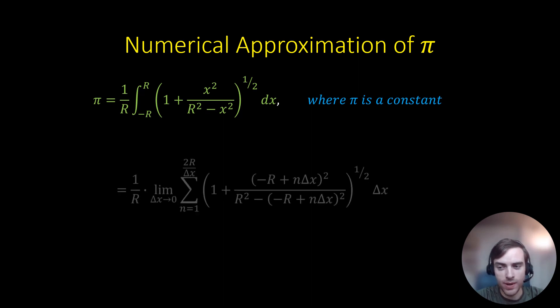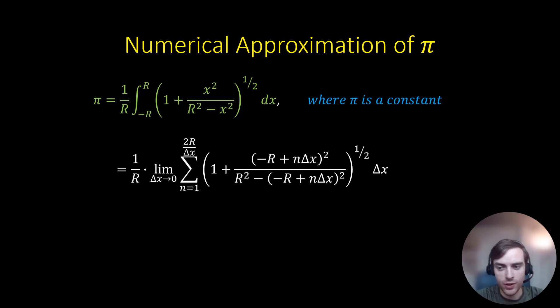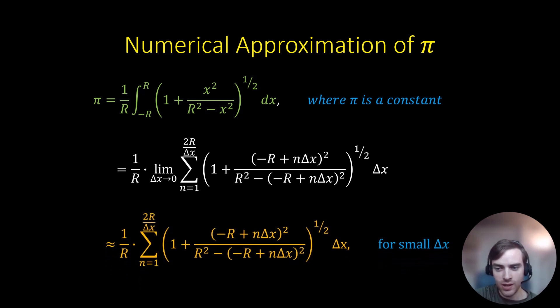And we will do this by first expressing the definite integral as a Riemann sum over index variable n. And then we could take out the limit as delta x approaches infinity, and just say that for small values of delta x, we will obtain values that are not exactly pi, but are close. And we can control how close our approximation for pi is to the true value of pi by changing the value of delta x right there.